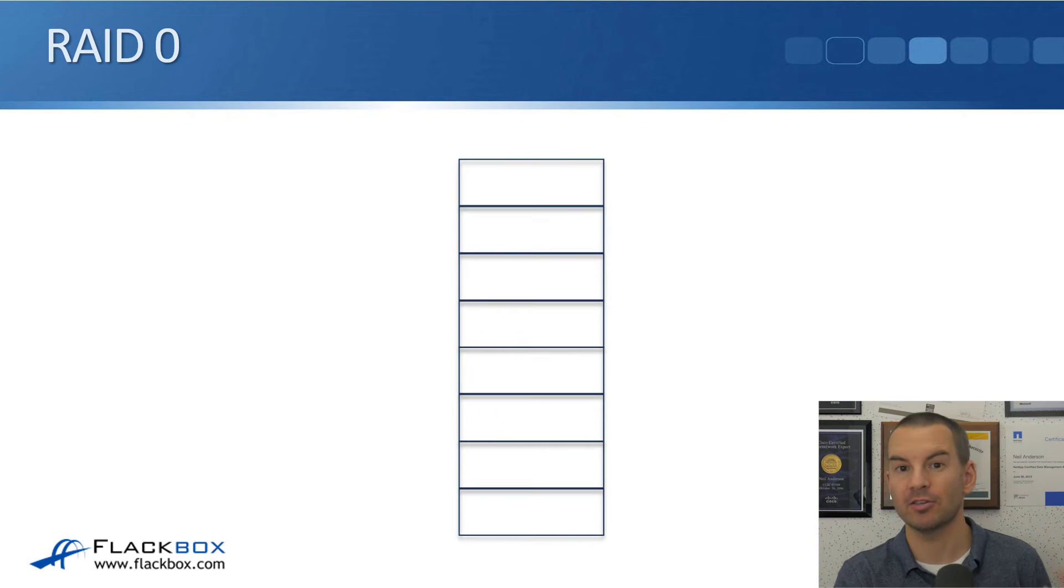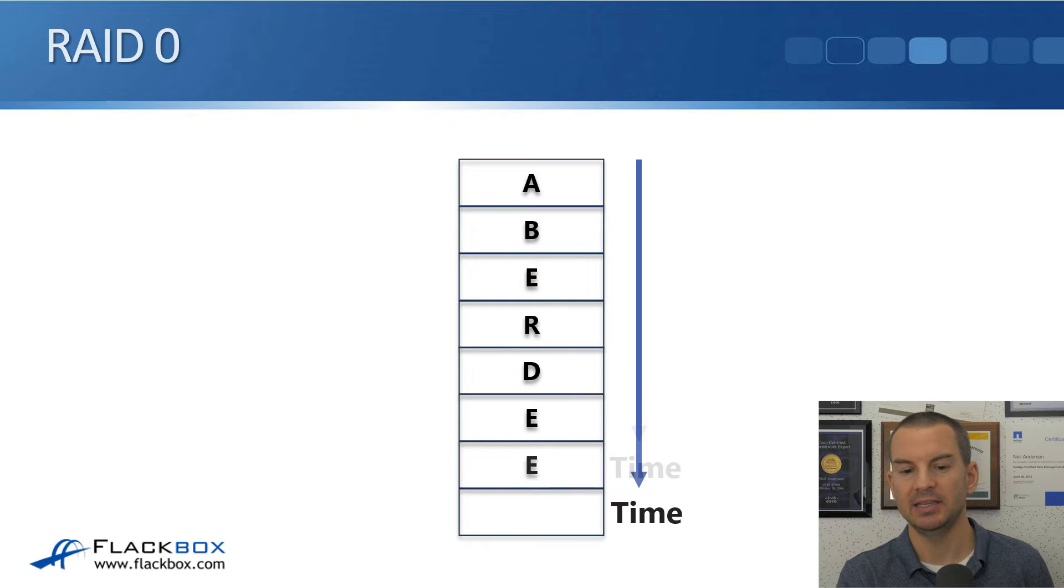So let's see how the performance is going to be improved. First off, we'll look at when we're just using one disk, and I'm going to write some data here. Let's say I'm going to write the name of my hometown, which is Aberdeen. So we write A, B, E, R, D, E, E, N. So you can see the time it took to write Aberdeen on that single disk there.